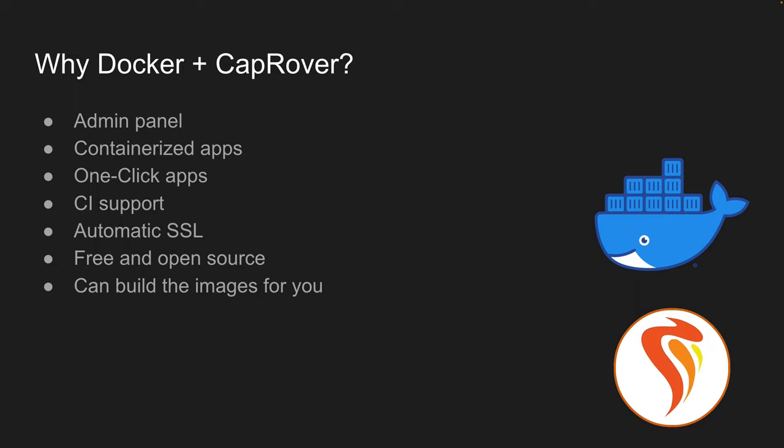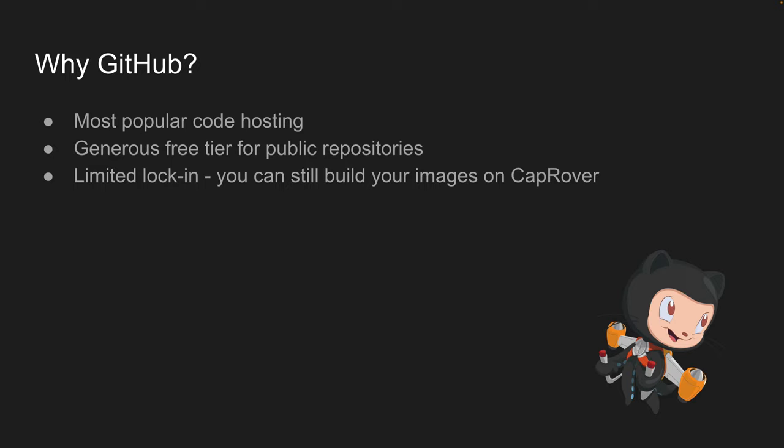CapRover can also build images for you instead of using GitHub CI, so you can use this stack without any other tools. As for why we use GitHub — it's the most popular code hosting platform right now and has a very generous free tier for public repositories when it comes to GitHub Actions, and the lock-in you experience is pretty limited.